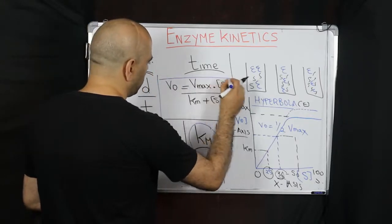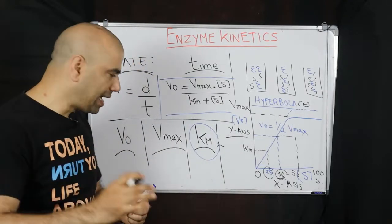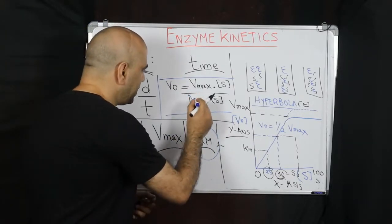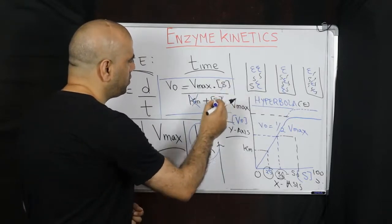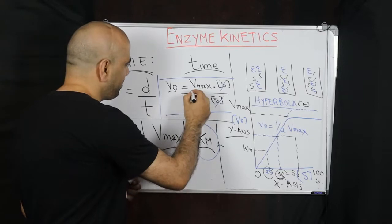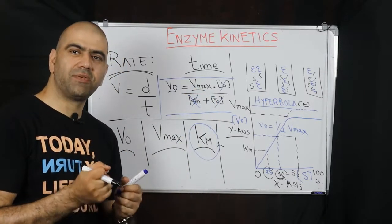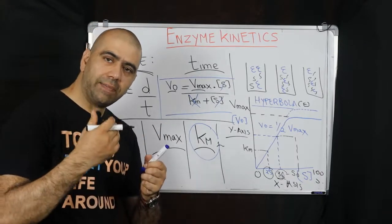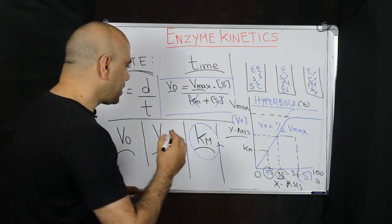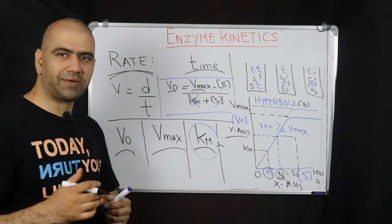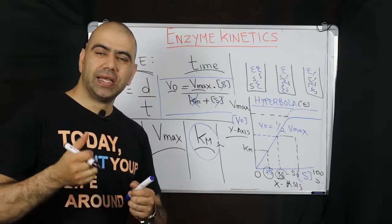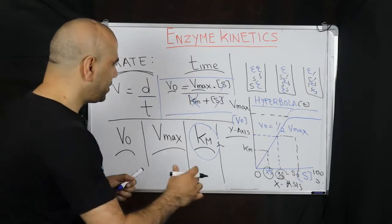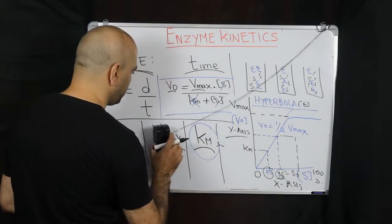It was Michaelis and Menten who tried to put this into an equation. That equation simply tells us that initial velocity has the ability to reach its maximum velocity depending upon the concentration of the substrate, divided by the Michaelis constant plus the substrate concentration. If the value of Km is so low as to be negligible, the initial velocity will approach the maximum velocity — that is why lesser Km means better efficiency.